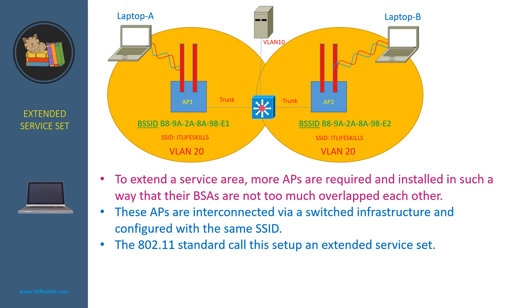To extend a service area, more APs are required and installed in such a way that their BSAs are not too much overlapped with each other. These APs are interconnected via a switch infrastructure and configured with the same SSID. The 802.11 standard calls this setup an Extended Service Set.